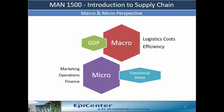The micro-dimension of logistics examines the relationships between logistics and other functional areas in an organization — marketing, manufacturing or operations, finance and accounting, among others.